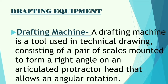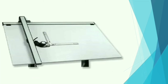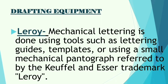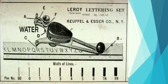Next is the drafting machine — a tool used in technical drawing consisting of a pair of scales mounted to form a right angle on an articulated protractor head that allows angular rotation. Here is a sample of a drafting machine. Next is Leroy — mechanical lettering is done using tools such as lettering guides, templates, or a small mechanical pantograph referred to by the trademark name Leroy. This is used for lettering.